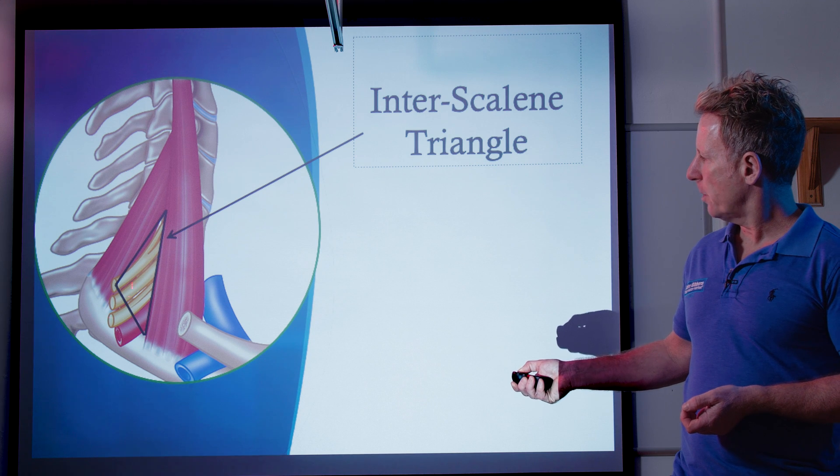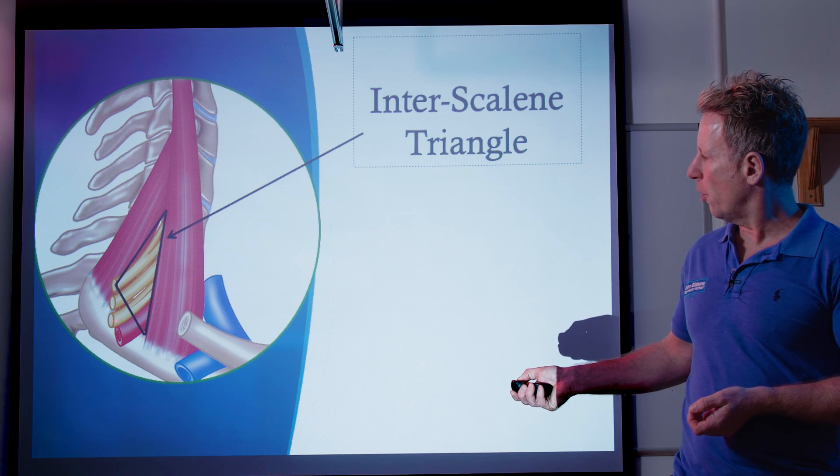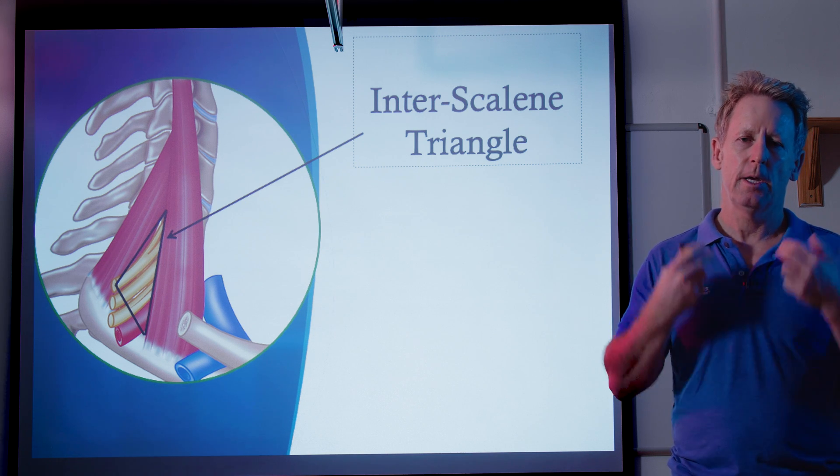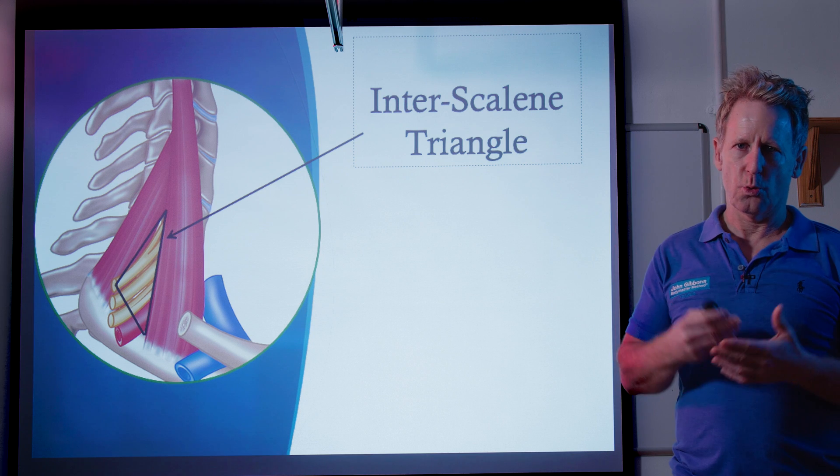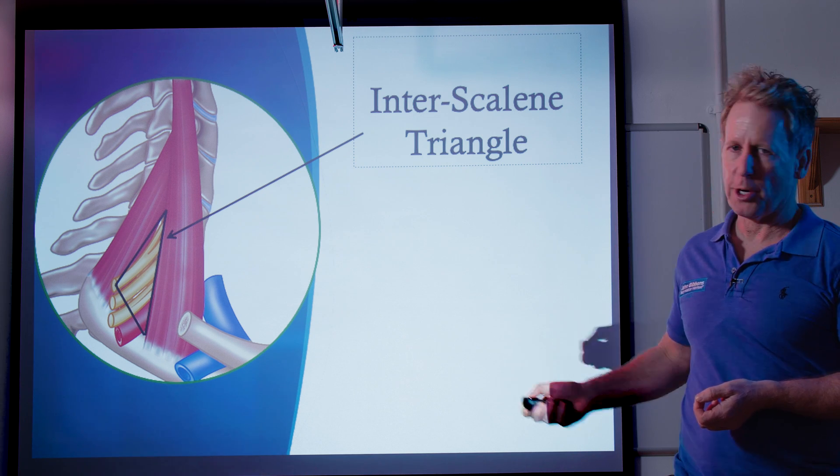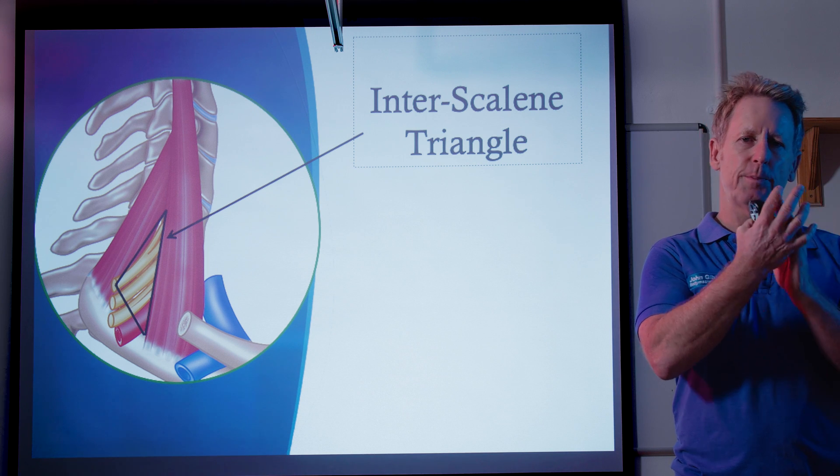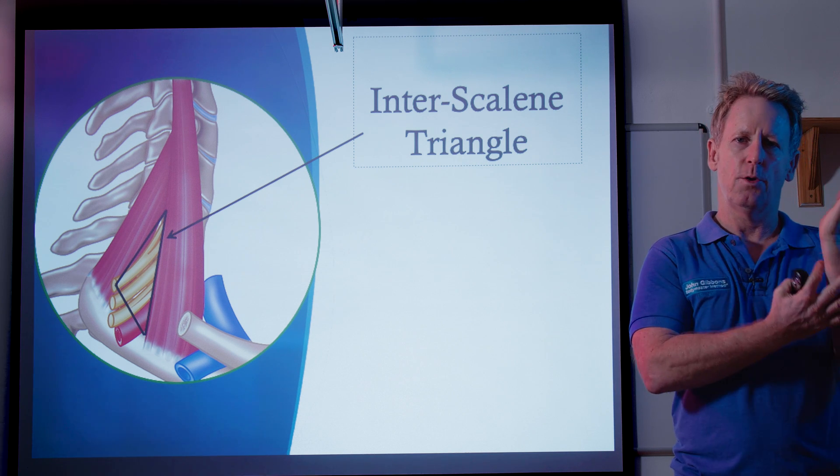The first rib, if the scalenes are pretty active, or if the first rib is maybe mechanically fixed up, they call it like an inspirated rib, then that too can also cause compression, typically of a lower brachial plexus, i.e. the C8 and T1. And the patient might get symptoms following like an ulnar nerve pathway.